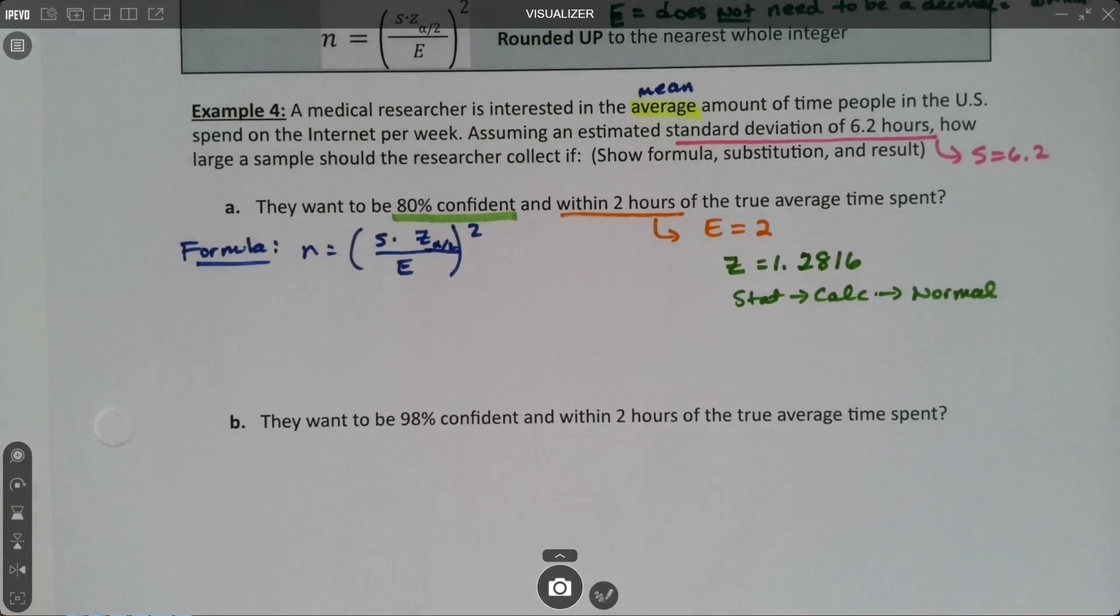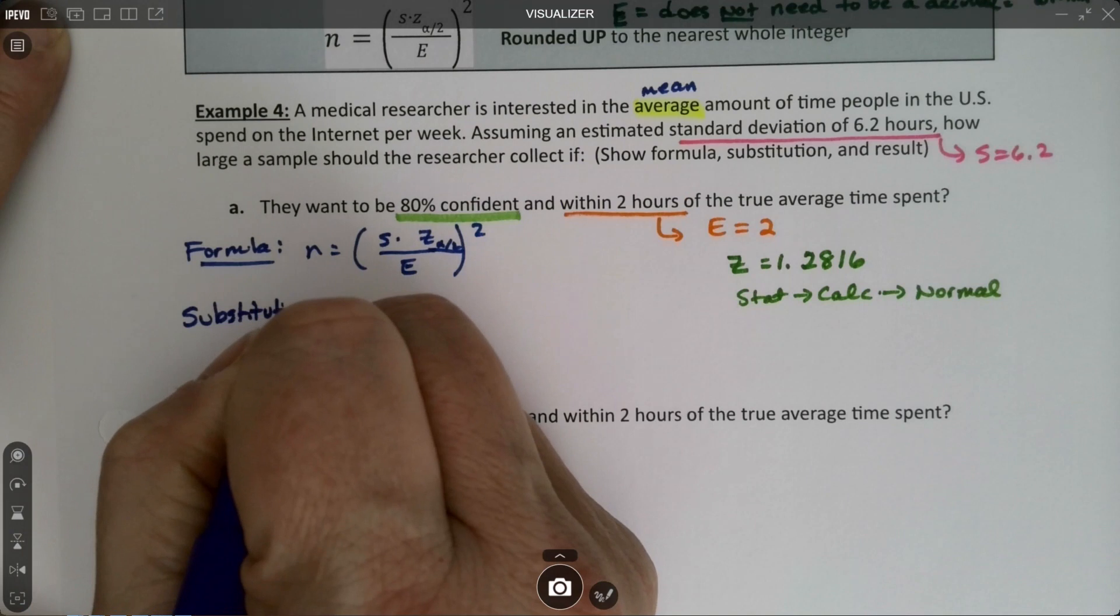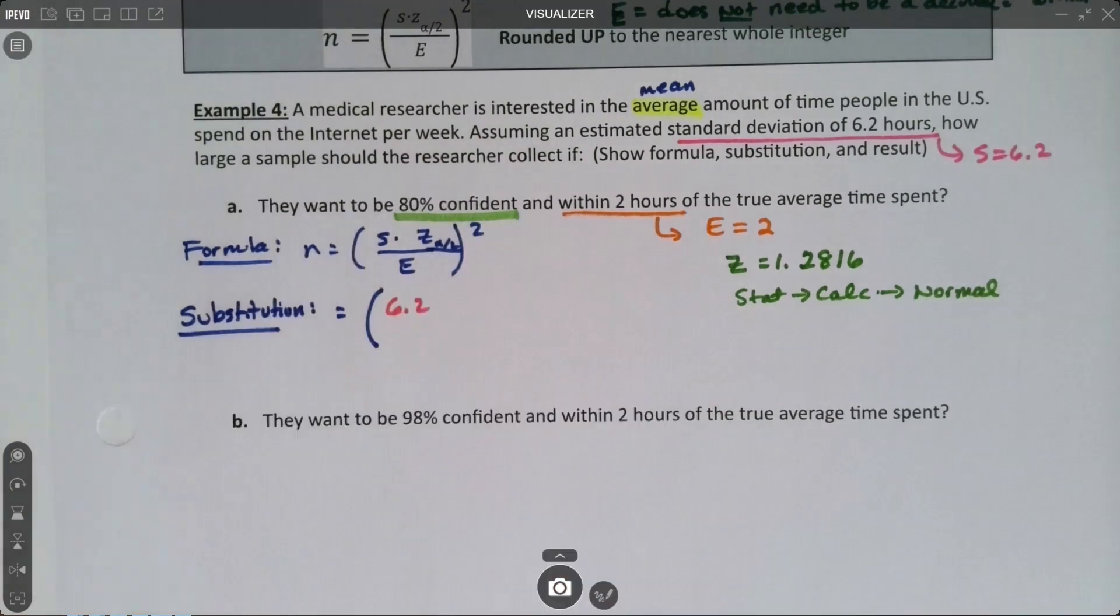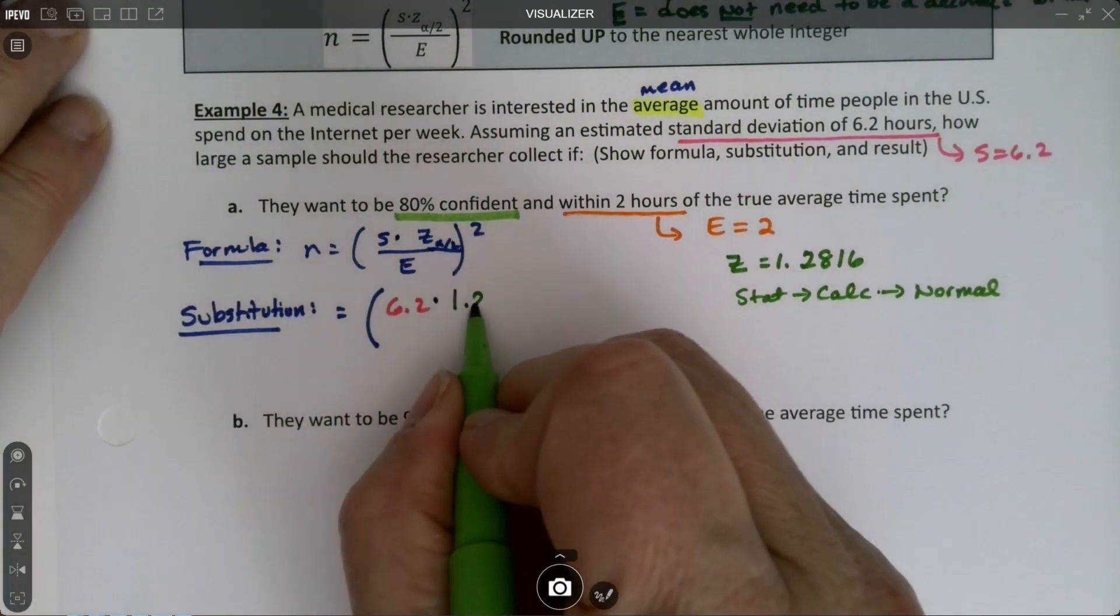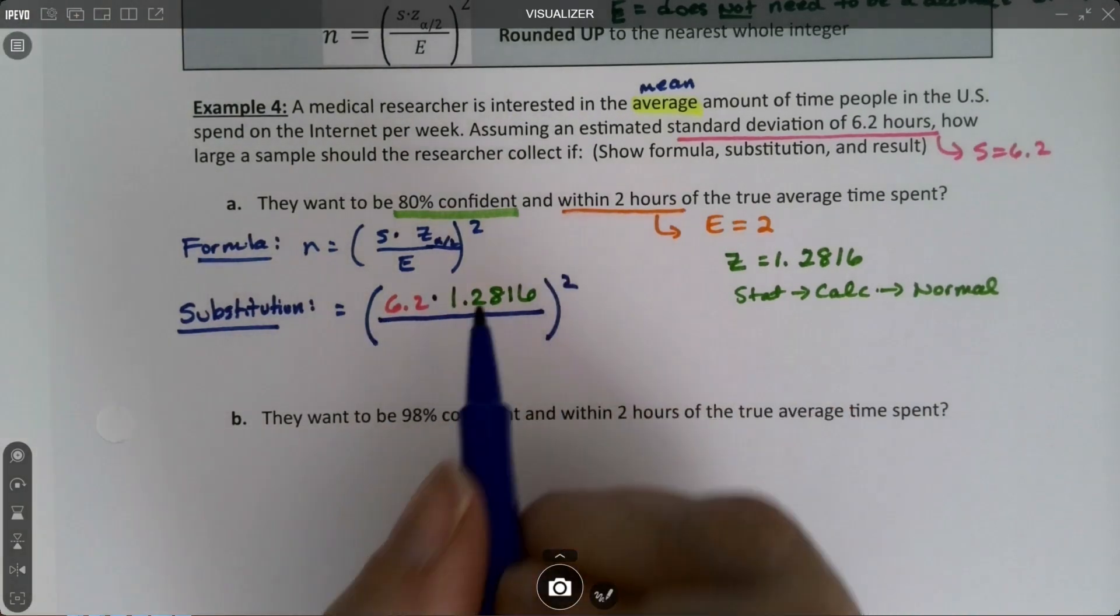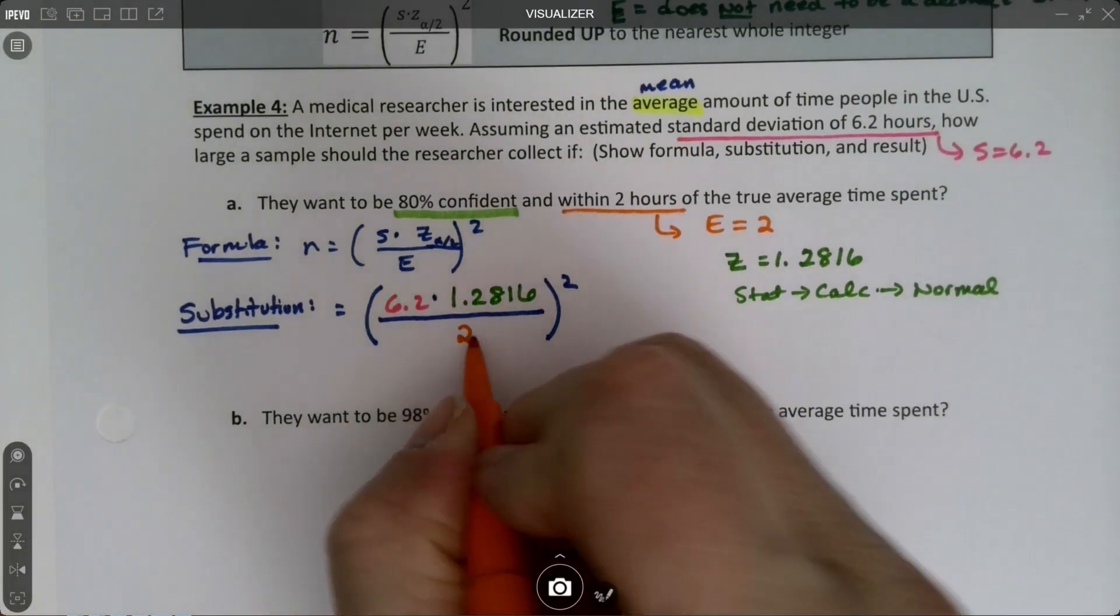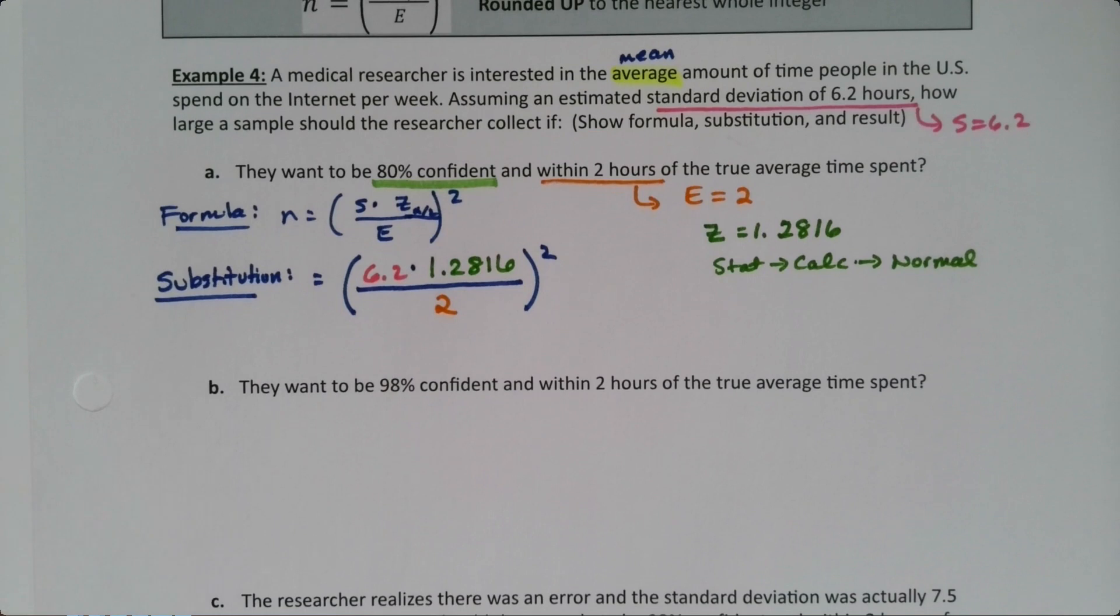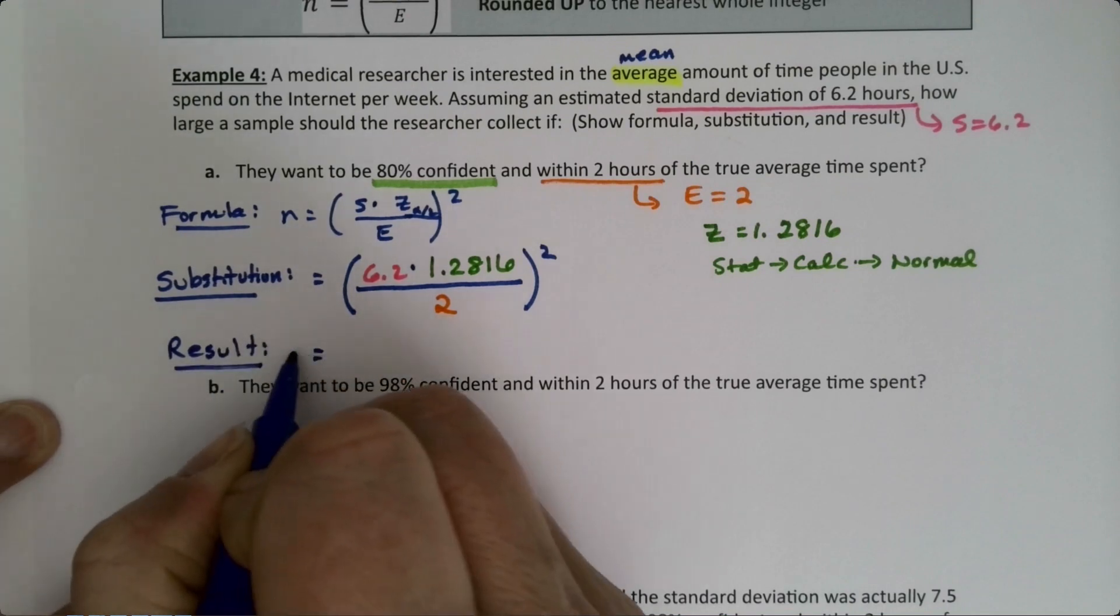So now when we go over here for the substitution step, we can say it's equal to, now the S is 6.2 times, there's a little times dot there. The Z, which we just found, is 1.2816 divided by the error. And the error was 2, the number 2. It's as simple as that. Does not have to be a decimal. That's not the way error works for this one. It only works that way with percentages. Okay, so we're going to go find it. We'll see what it is. So that's our result.